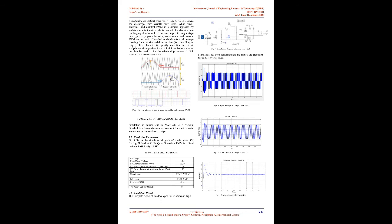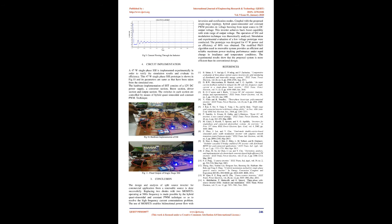Hybrid Quasi-Sinusoidal and Constant PWM, as the name implies, refers to the simultaneous employment of constant duty cycle switching and sinusoidally varying duty cycle switching on the two legs of the full bridge inverter. As distinct from approaches where inductor L is charged and discharged with variable duty cycle, this hybrid approach is simpler, enabling constant duty cycle to control the charging and discharging of inductor L. Therefore, despite the single-stage topology, the proposed method has the merit of detached modulation for DC-DC voltage boosting from the sinusoidal modulation for controlling AC output. This greatly simplifies the circuit analysis, and equations for a typical DC-DC boost converter can thus be used to find the relationship between DC-link voltage V_INV and DC-source V_DC.